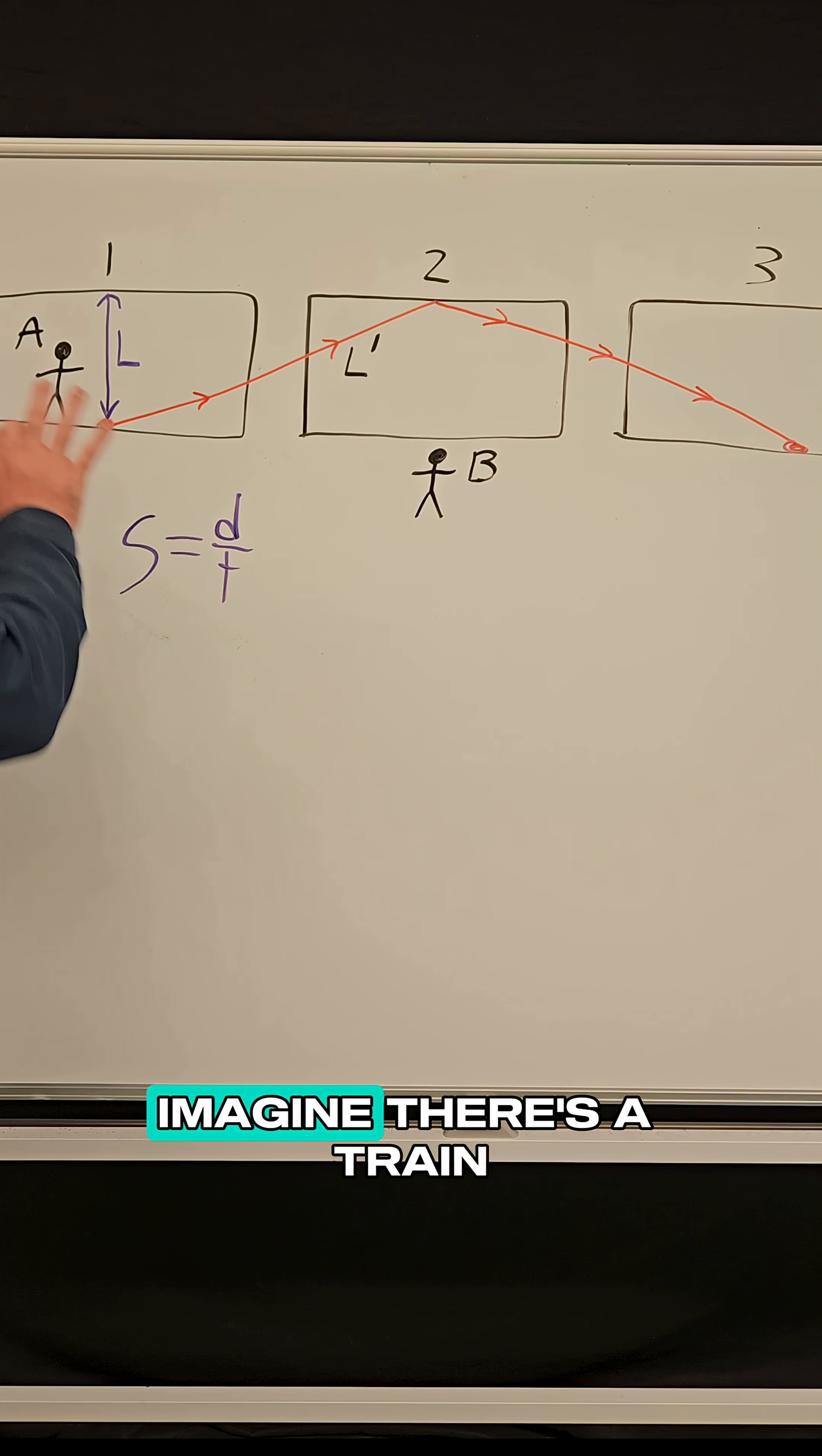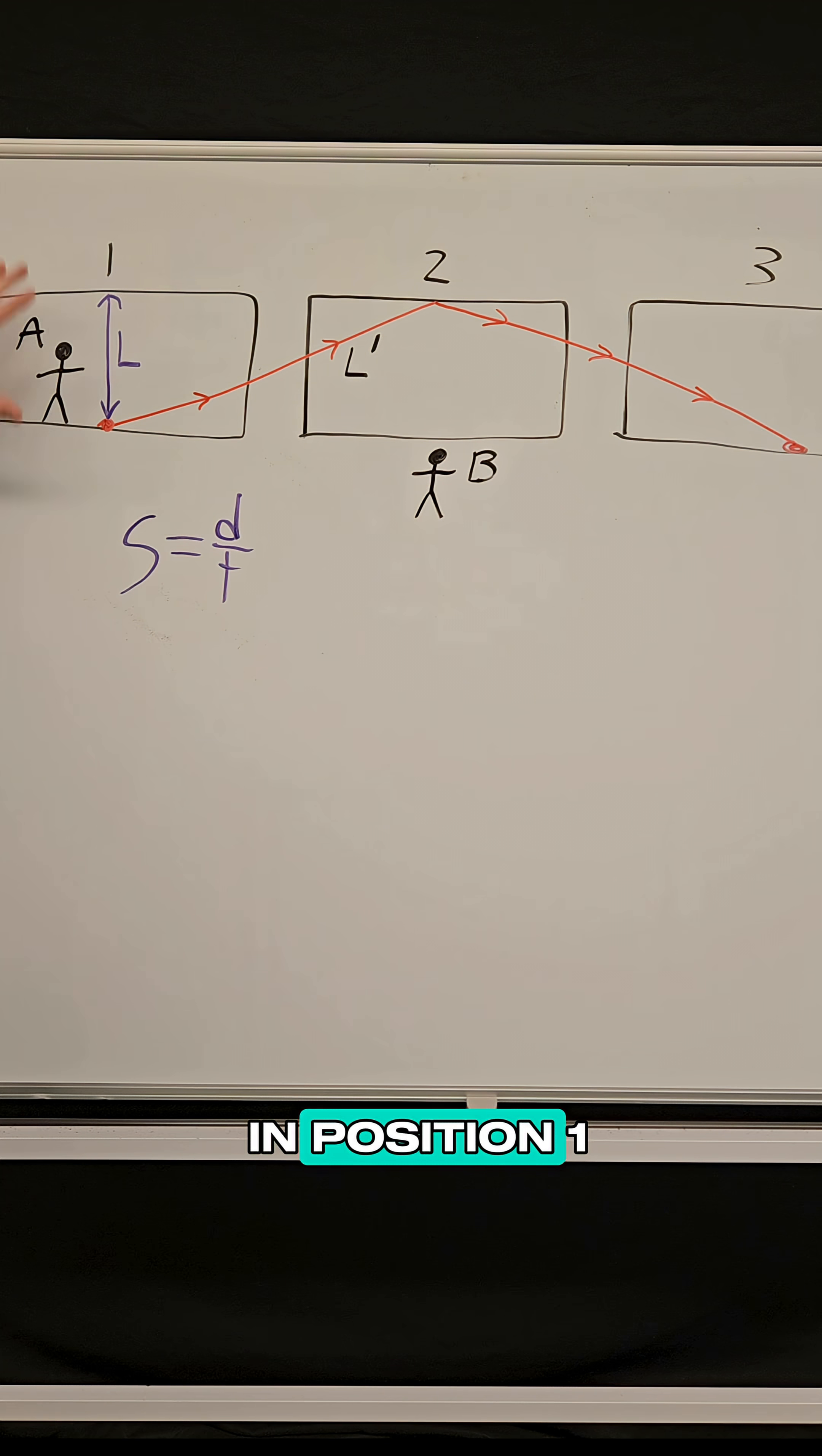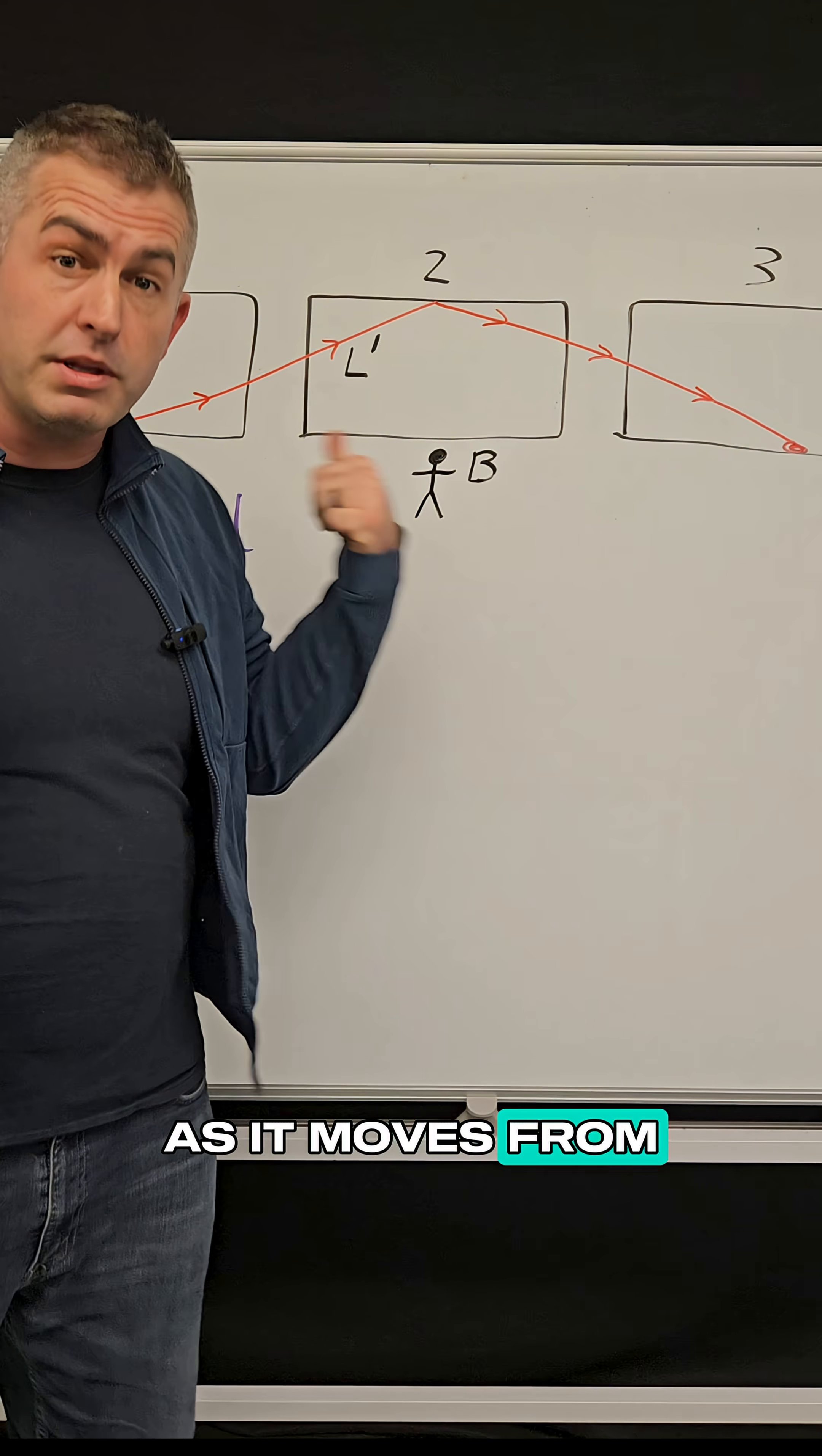So Einstein said, imagine there's a train car going by. The train is at position one, then position two, then position three. These are just three snapshots of where the train is as it moves from left to right.